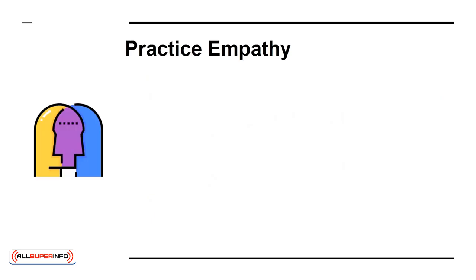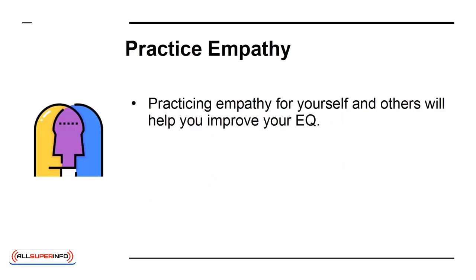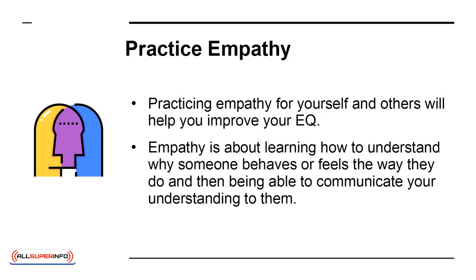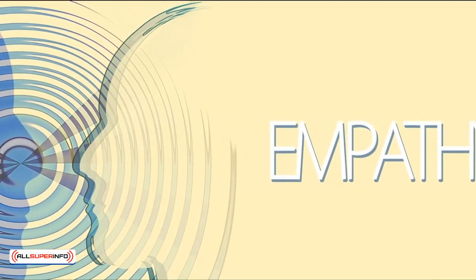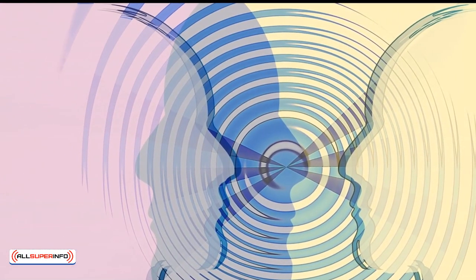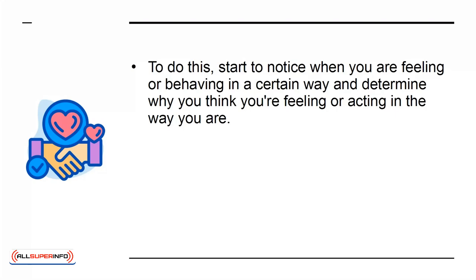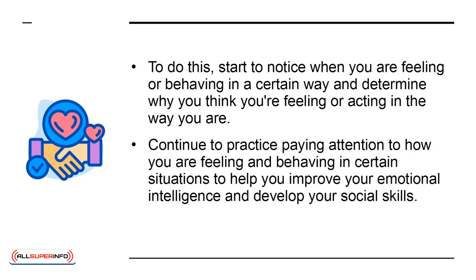Practice empathy. Practicing empathy for yourself and others will help to improve your EQ. Empathy is about learning how to understand why someone behaves or feels the way they do, and then being able to communicate your understanding to them. You can improve your empathy toward others by first practicing empathy with yourself. To do this, start to notice when you are feeling or behaving in a certain way and determine why you think you're feeling or acting in the way you are. Continue to practice paying attention to how you are feeling and behaving in certain situations to help you improve your emotional intelligence and develop your social skills.